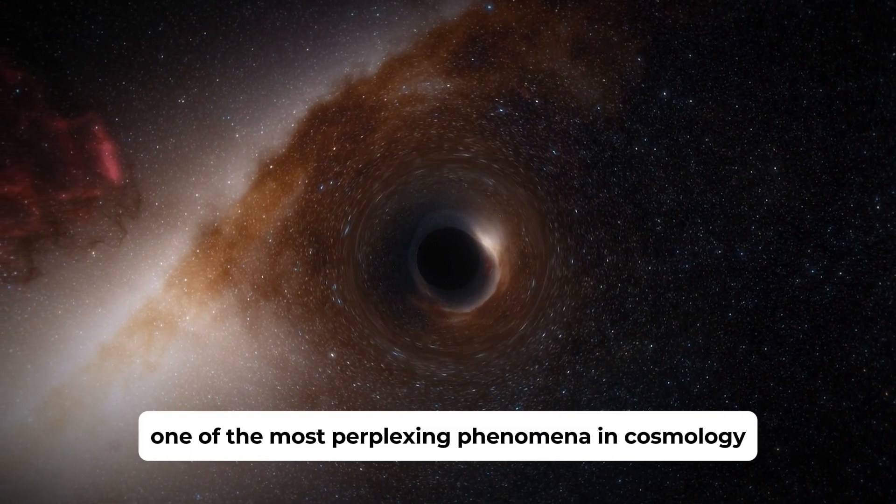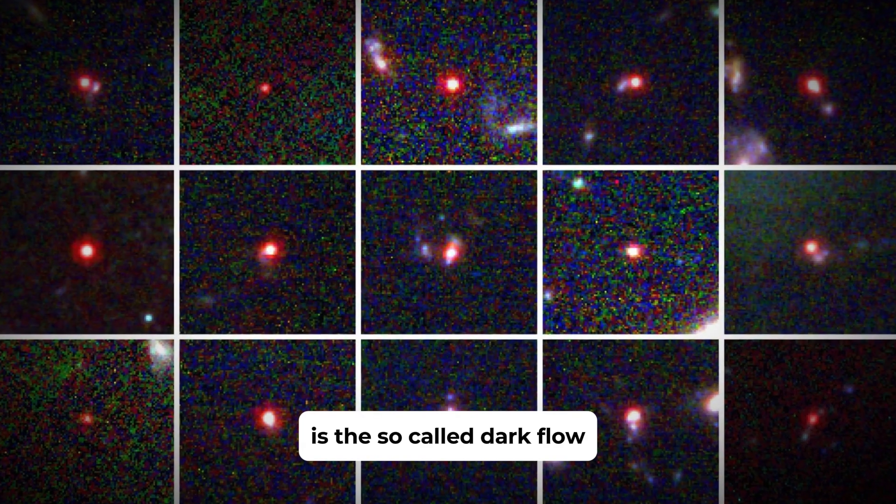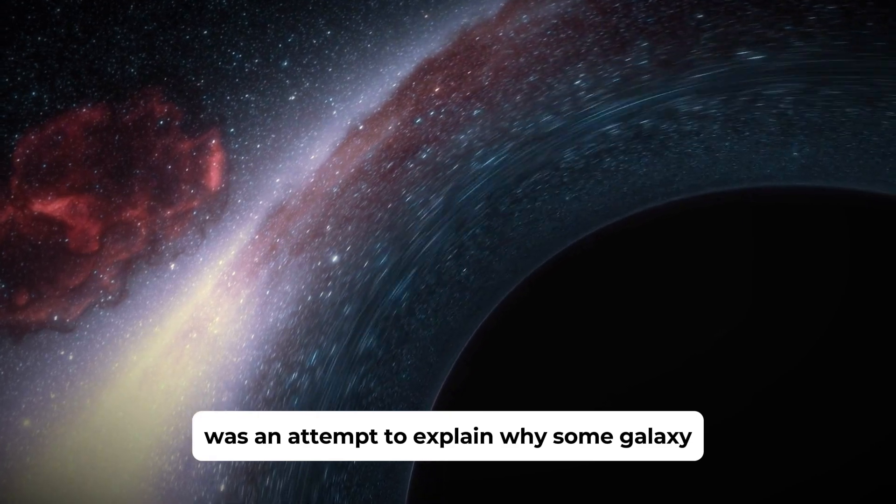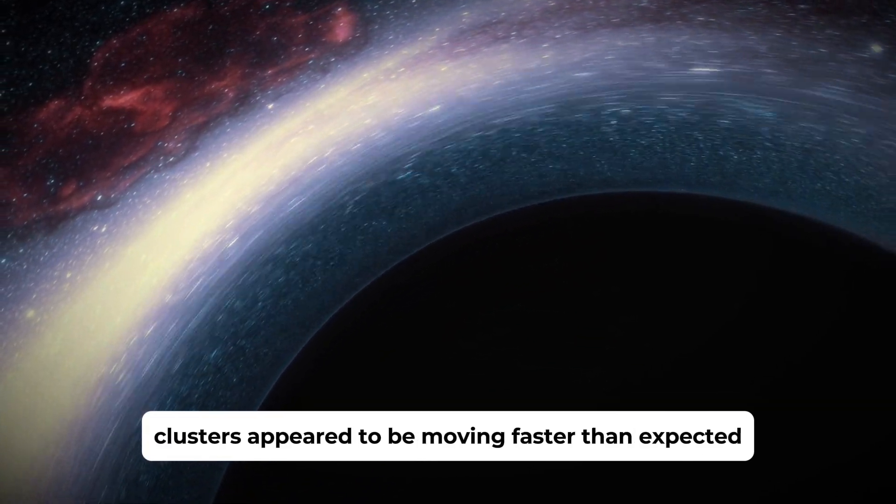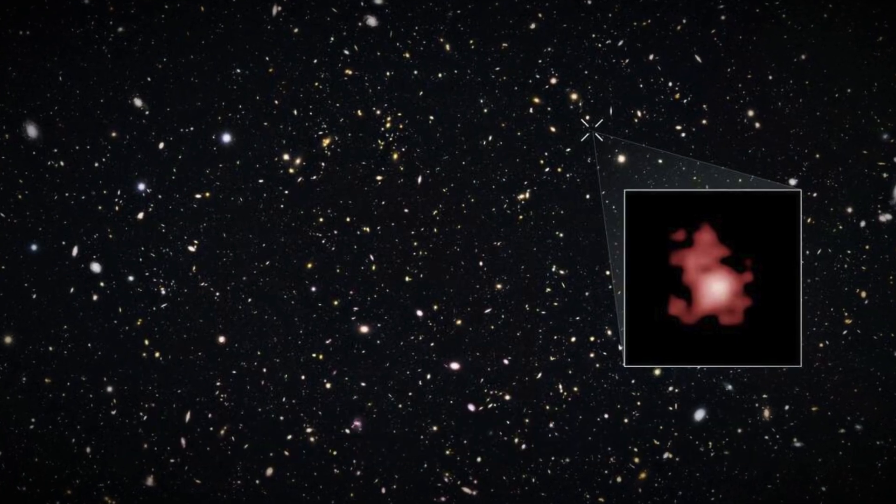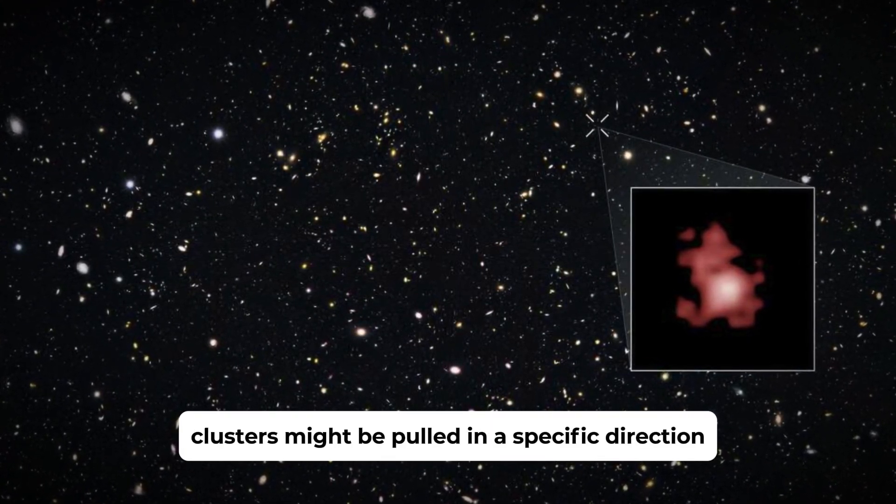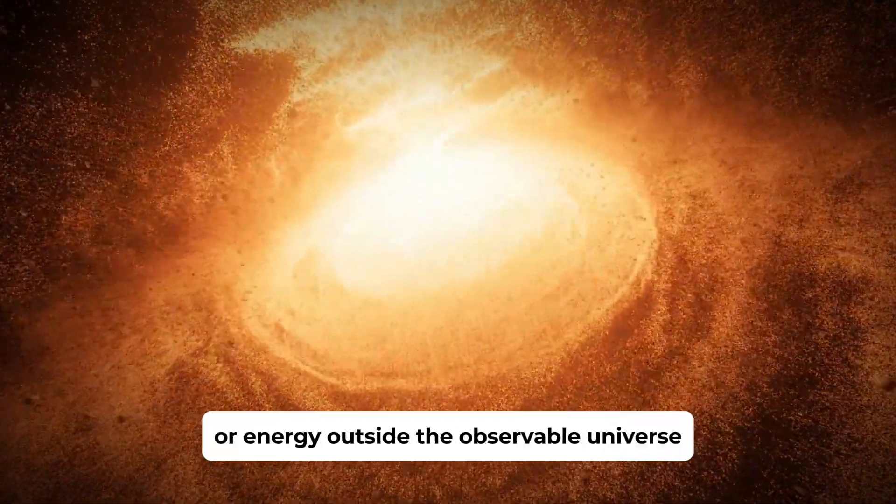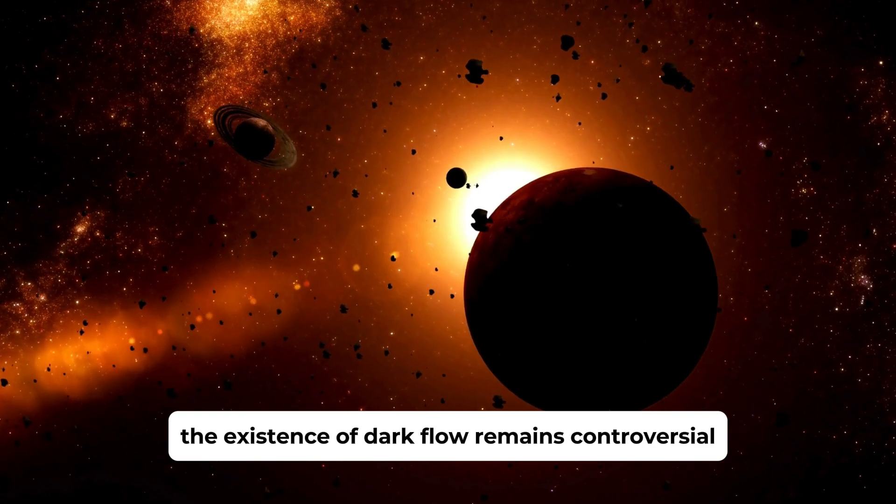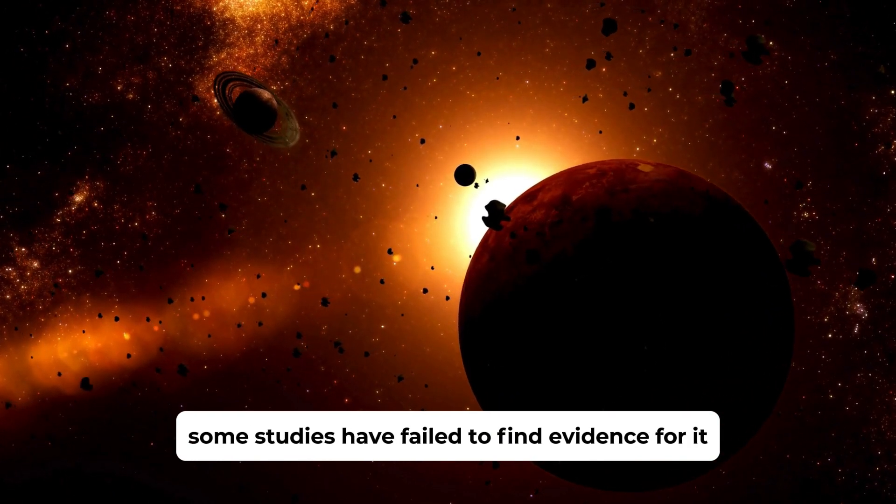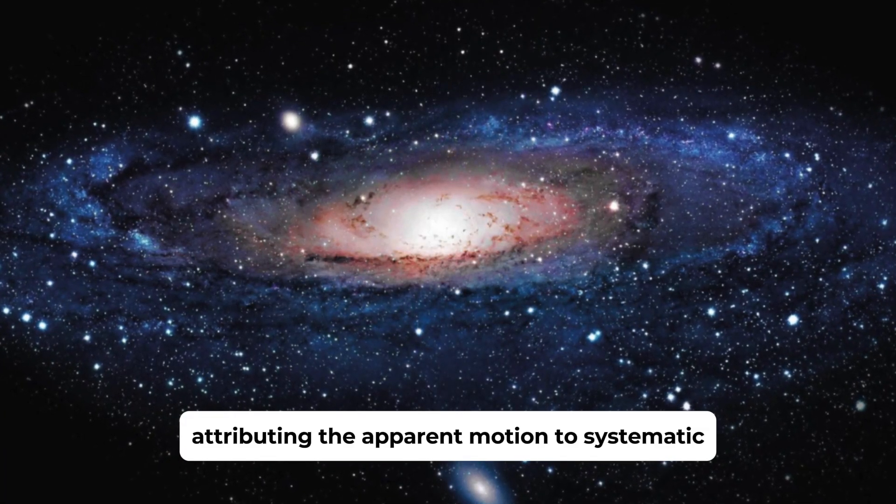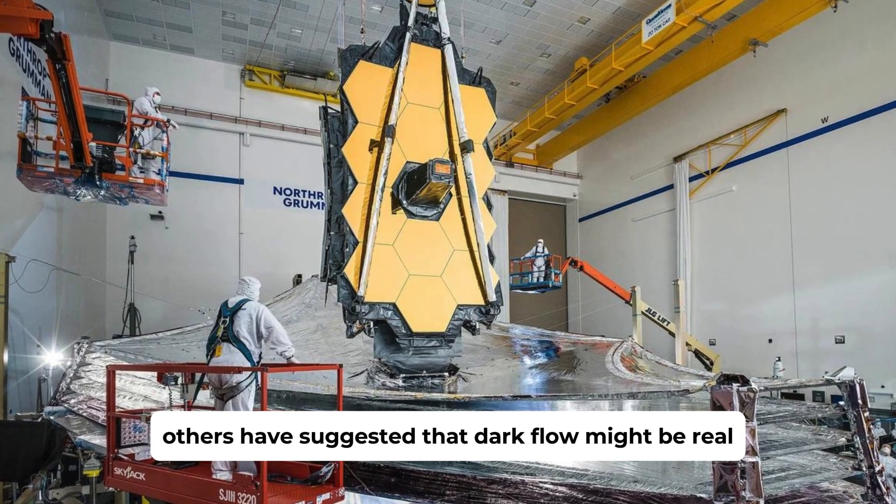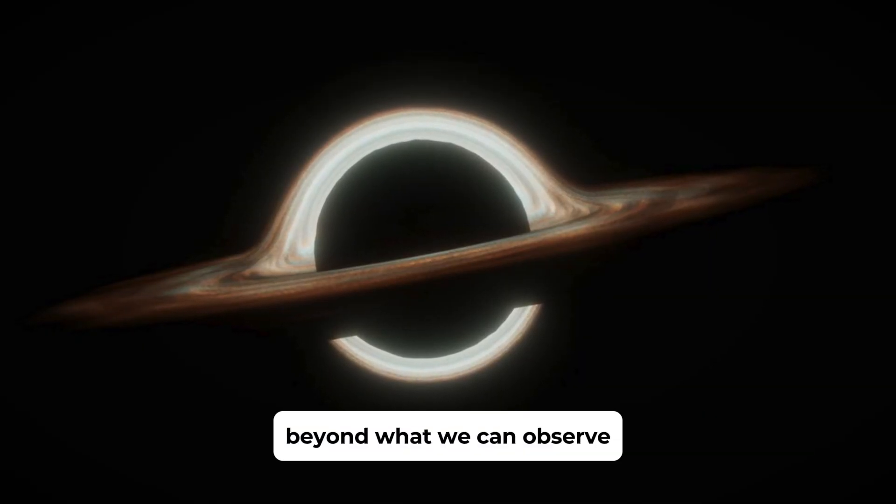One of the most perplexing phenomena in cosmology is the so-called dark flow. First proposed in 2008, dark flow was an attempt to explain why some galaxy clusters appeared to be moving faster than expected, given the known distribution of matter in the universe. The theory suggested that these galaxy clusters might be pulled in a specific direction by dark or invisible matter or energy outside the observable universe. However, the existence of dark flow remains controversial. Some studies have failed to find evidence for it, attributing the apparent motion to systematic measurement errors. Others have suggested that dark flow might be real and could be caused by a massive structure in the cosmos beyond what we can observe.